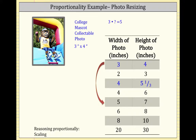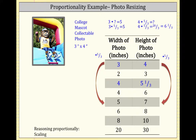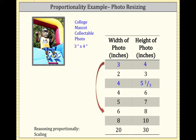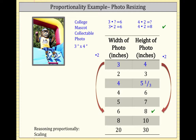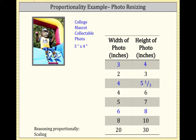Next: 3 times what is 5? That's 3 times 5-thirds is 5, so the scale factor is 5-thirds. Then 4 times 5-thirds is 20-thirds, or 6 and 2-thirds, which is not the same as 7 — so that doesn't work. Next: 3 times what is 6? That's 3 times 2 is 6, so the scale factor is 2. We check: 4 times 2 is 8. That matches the table. So a 3x4 photo can be scaled to a 6x8 photo without distorting the image — highlighted in blue.